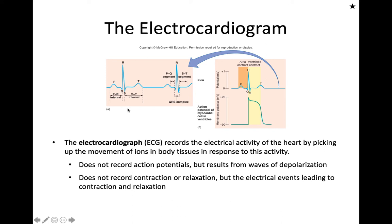Following the Q wave, we get the R and S waves, then another isoelectric line. The QRS complex represents ventricular depolarization, and it's quite large, which makes sense given the size of the ventricle. The ventricle depolarizes prior to contraction, and we see that depolarization before the actual buildup of force. After the ventricle depolarizes, it repolarizes, and that repolarization is represented by the T wave.